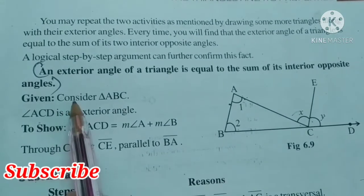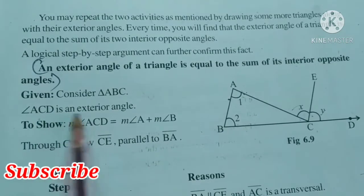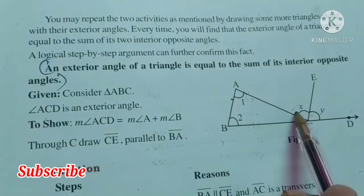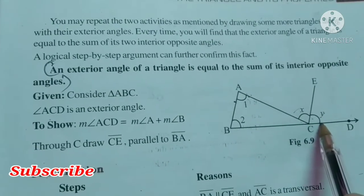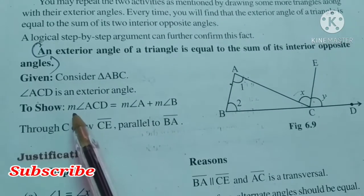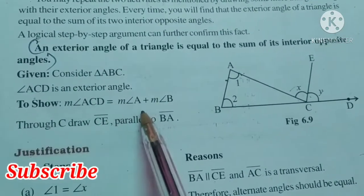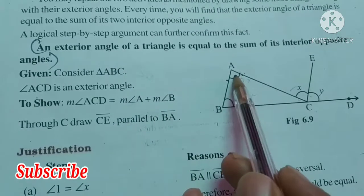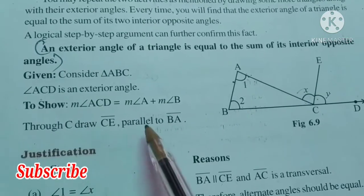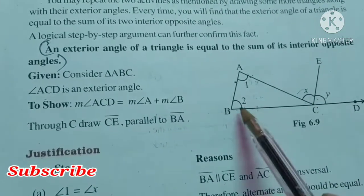So first, given: consider triangle ABC. Angle ACD is an exterior angle—this whole X plus Y is the exterior angle. We have to show that measure of angle ACD is equal to measure of angle A plus measure of angle B. This 1 plus 2. Through C, draw CE parallel to BA. This we have to draw parallel to AB.